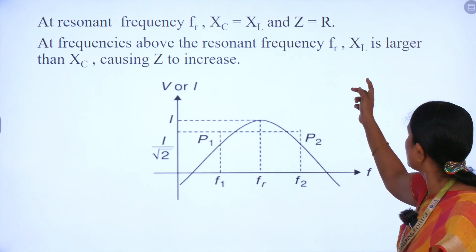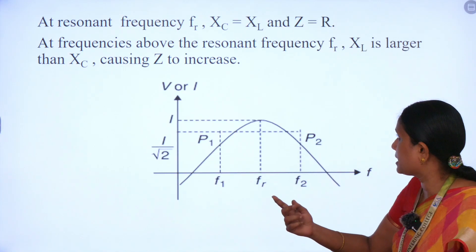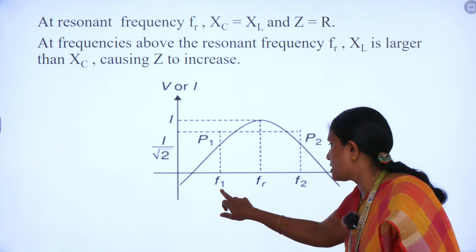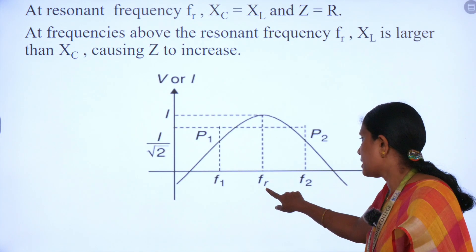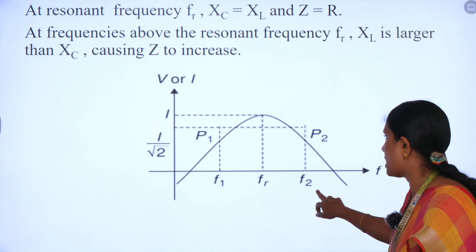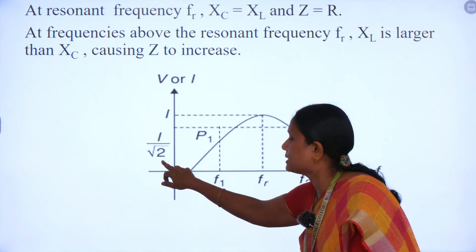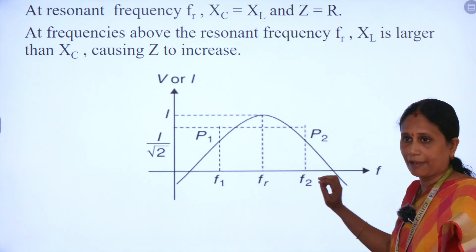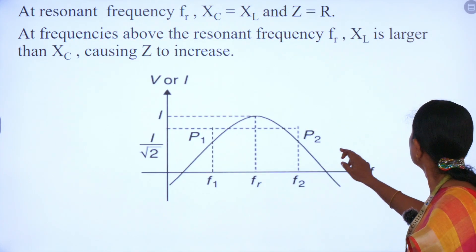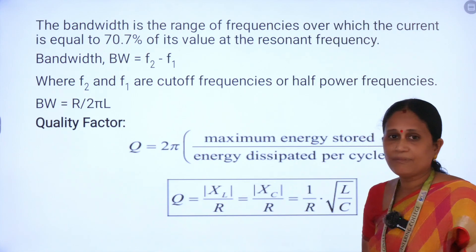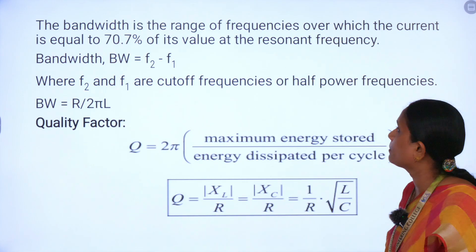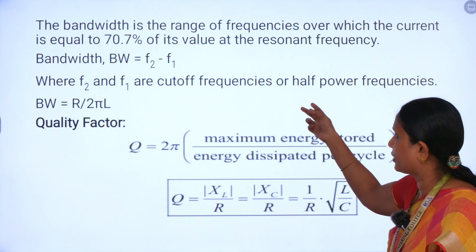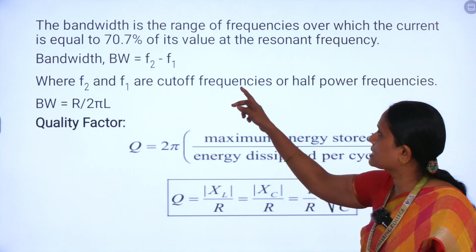At frequency above the resonance frequency, XL will be larger than XC, causing Z to increase. These are the cutoff frequencies: F1 is the lower cutoff frequency, FR is the resonant frequency, F2 is the upper cutoff frequency, and 1/√2 is the 3 dB frequency. This is the F versus I curve. Bandwidth is the difference between the upper cutoff frequency and the lower cutoff frequency: BW = F2 − F1.